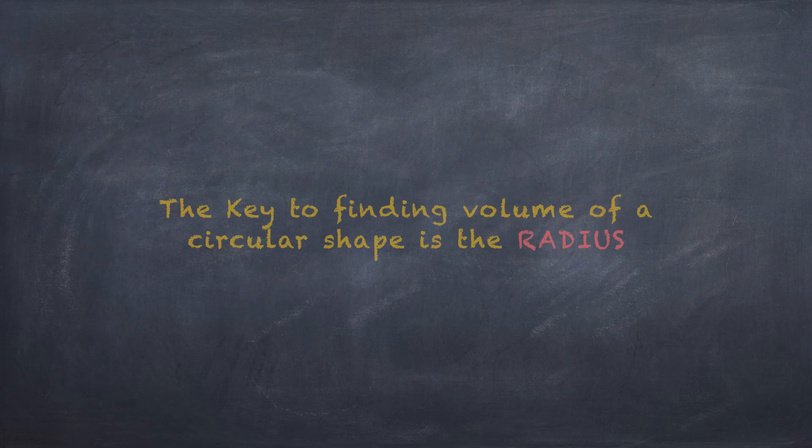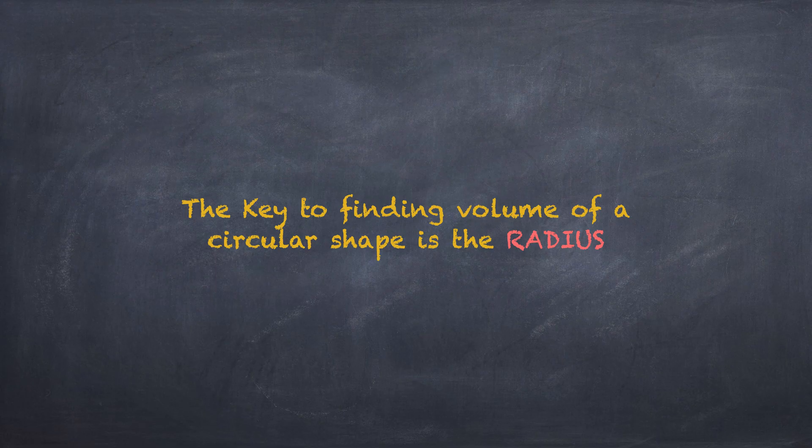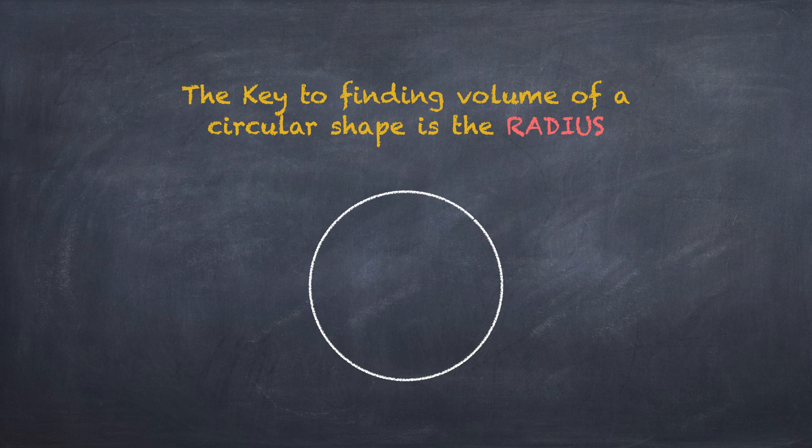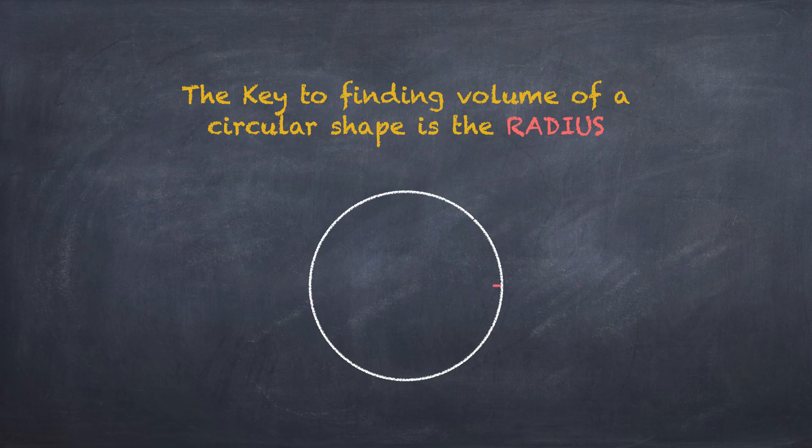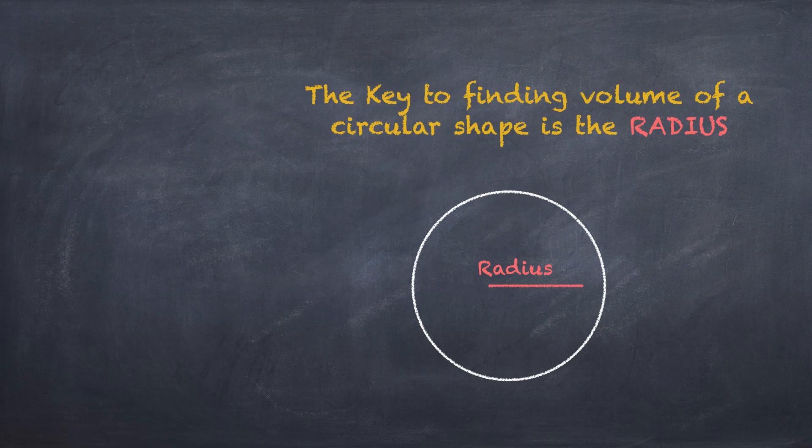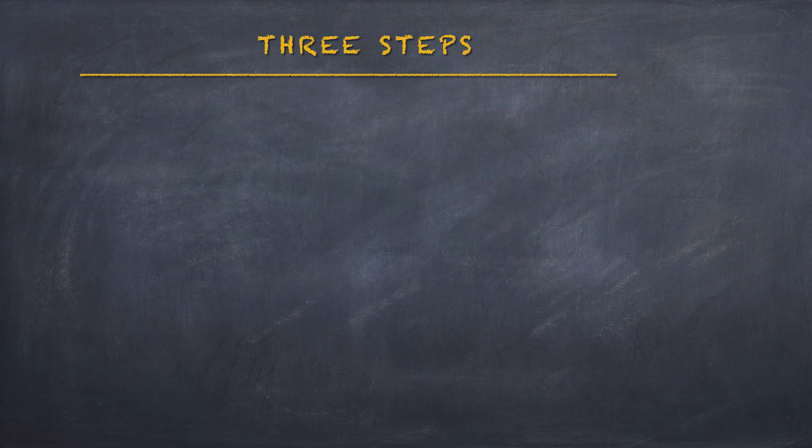And the key to finding the volume of all of these shapes is the radius. If you know how to find the radius, these will be pretty easy to do. So let's draw a circle here. The radius is from the center of the circle to the edge of the circle. That distance in any circle is the radius. So once you know how to find the radius...